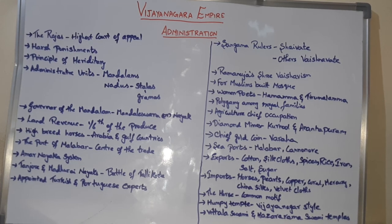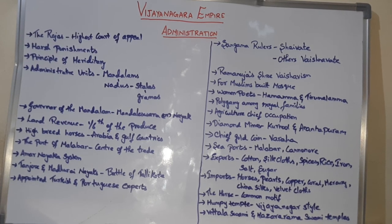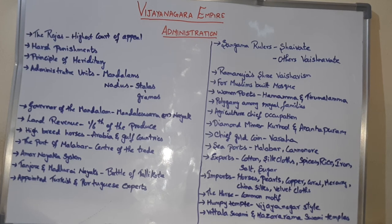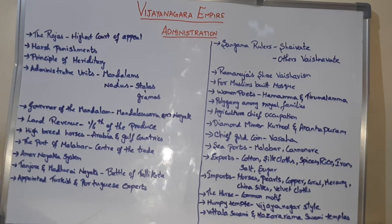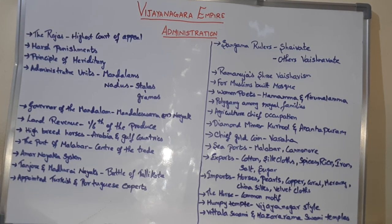Inland, coastal, and horse trade was conducted separately from the Malabar coast, the chief being the Kurnool coast. The main exports of Vijayanagara were cotton, silk, cloves, spices, rice, iron, salt, saltpetre, and sugar.